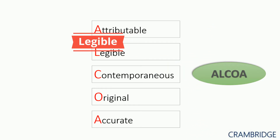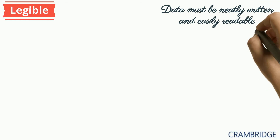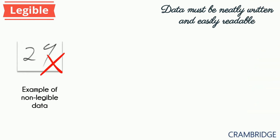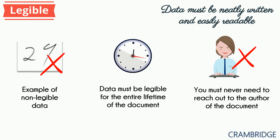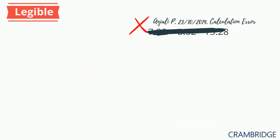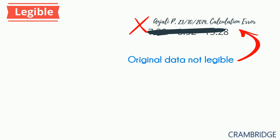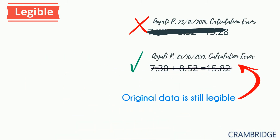L in ALCOA stands for legible. Data must be neatly written and easily readable by everyone. This is an example of data that is not legible. Data must remain legible for the entire life of the document — the content must be clear and permanent. You must never need to reach out to the author of the document. Now let's look at what's wrong with this picture: the change is attributable, but the original recorded data is not legible. Here's the correct way to make the same modification.